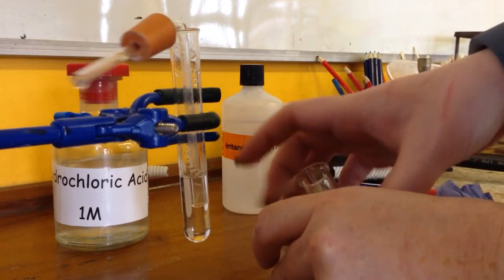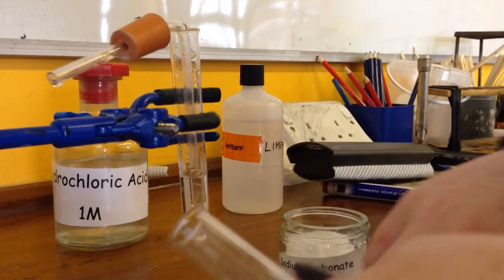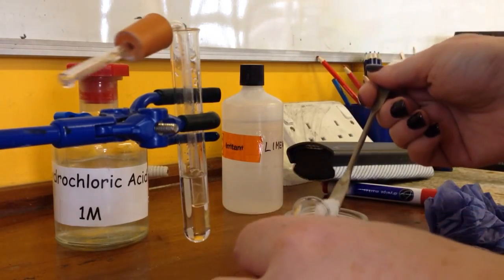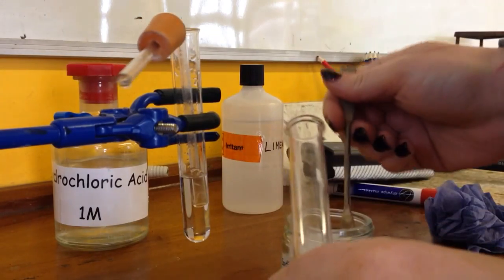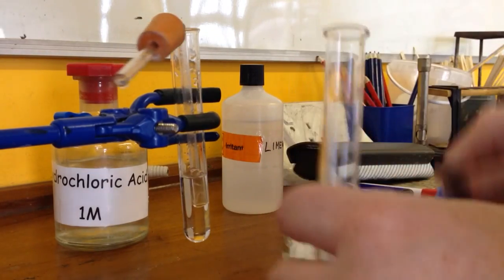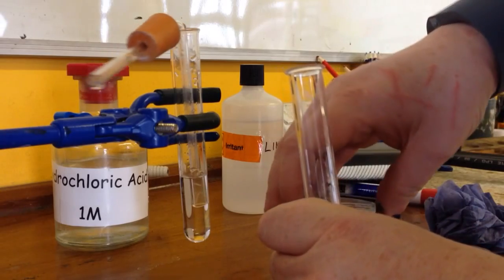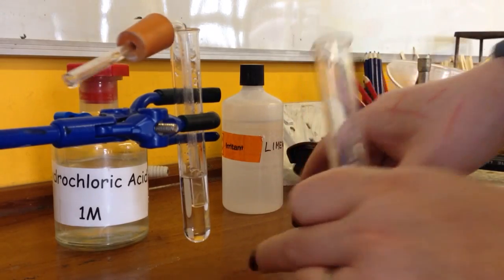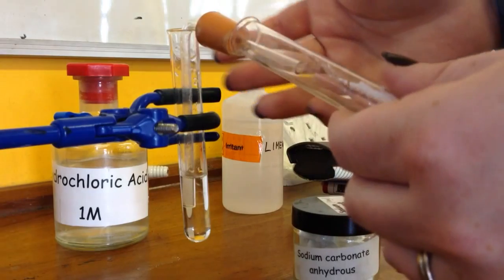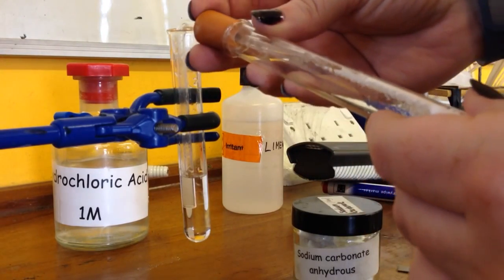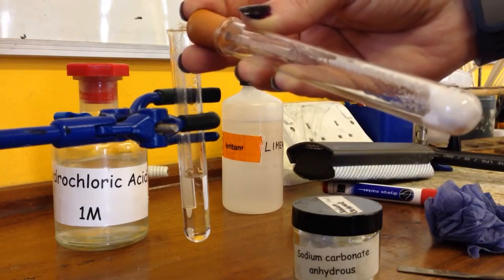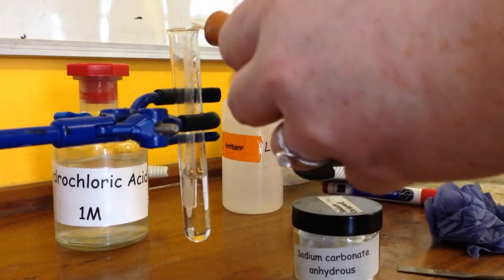I'm going to put some spatulas of my sodium carbonate into the bottom of a test tube, so it's all down the bottom there. And you need to be working quite quickly when you do this, because what you need to do is as soon as you add the hydrochloric acid to this test tube, you need to be bunging it straight away so that we can collect what happens.